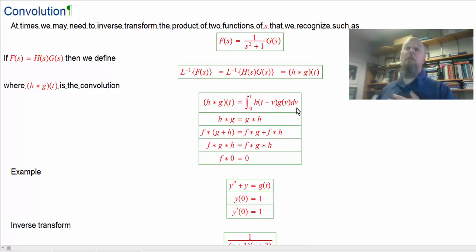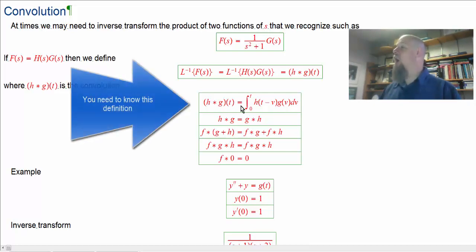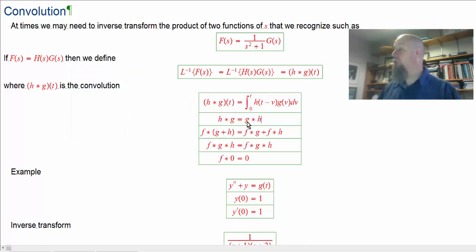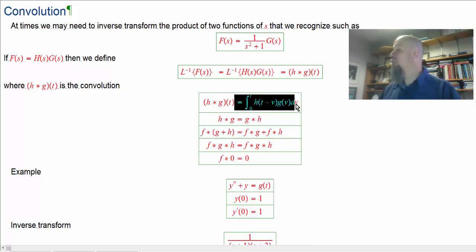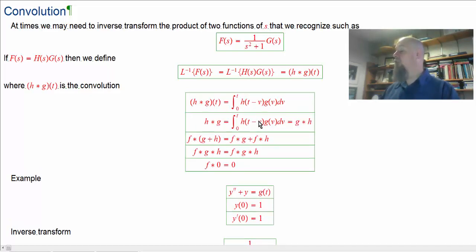Let's take a look at some properties. For now, let's just take it for granted that this integral is the definition of h convoluted with g. First property: h convoluted with g equals g convoluted with h — that's how we want it to work, just like regular multiplication. To prove this, I could write out h convoluted with g, use the integral definition, do some substitutions, and switch it around to be g convoluted with h.